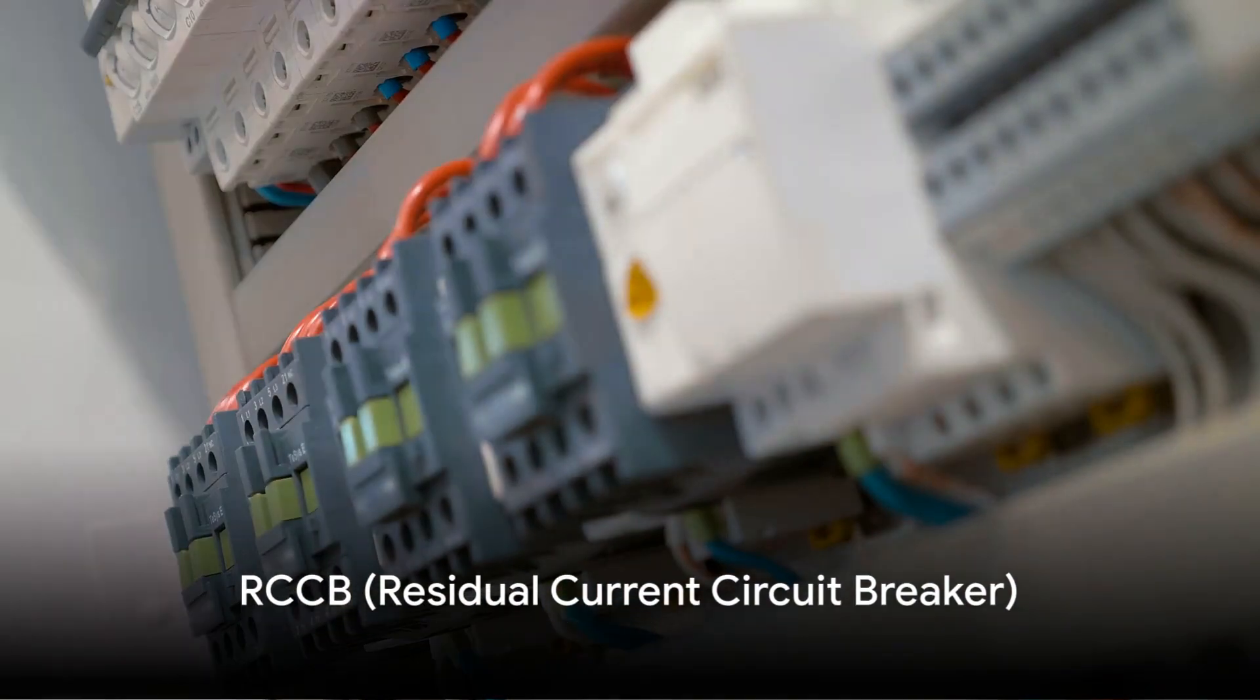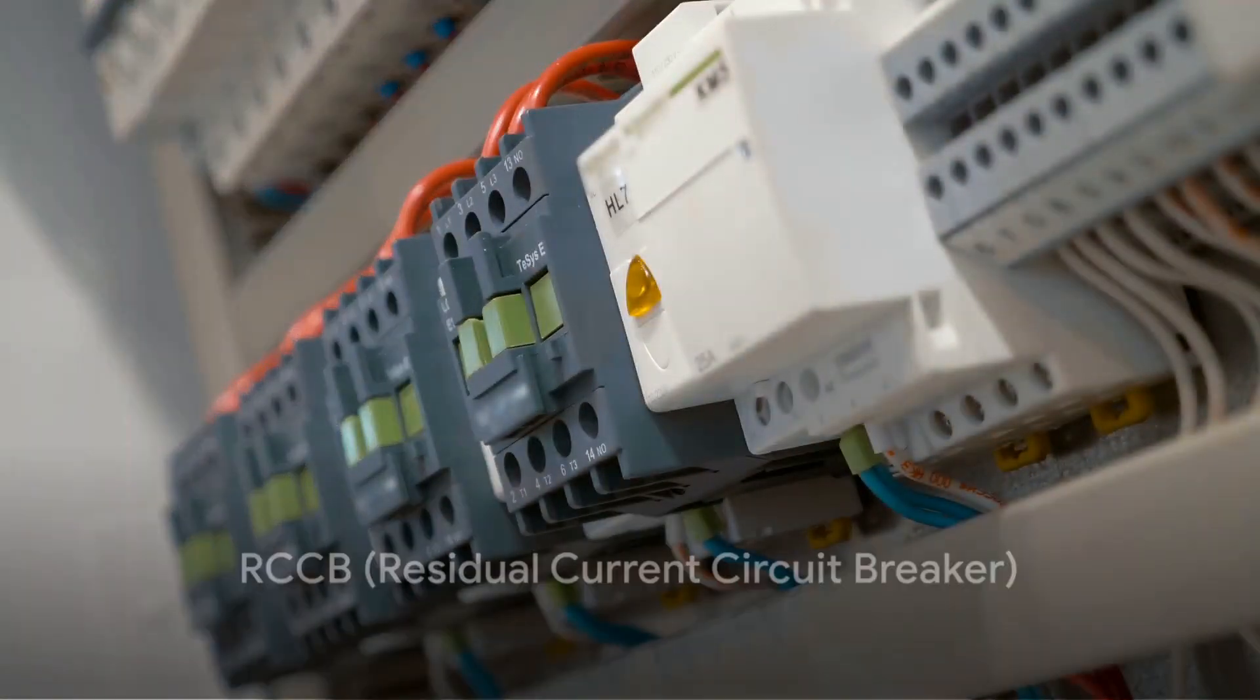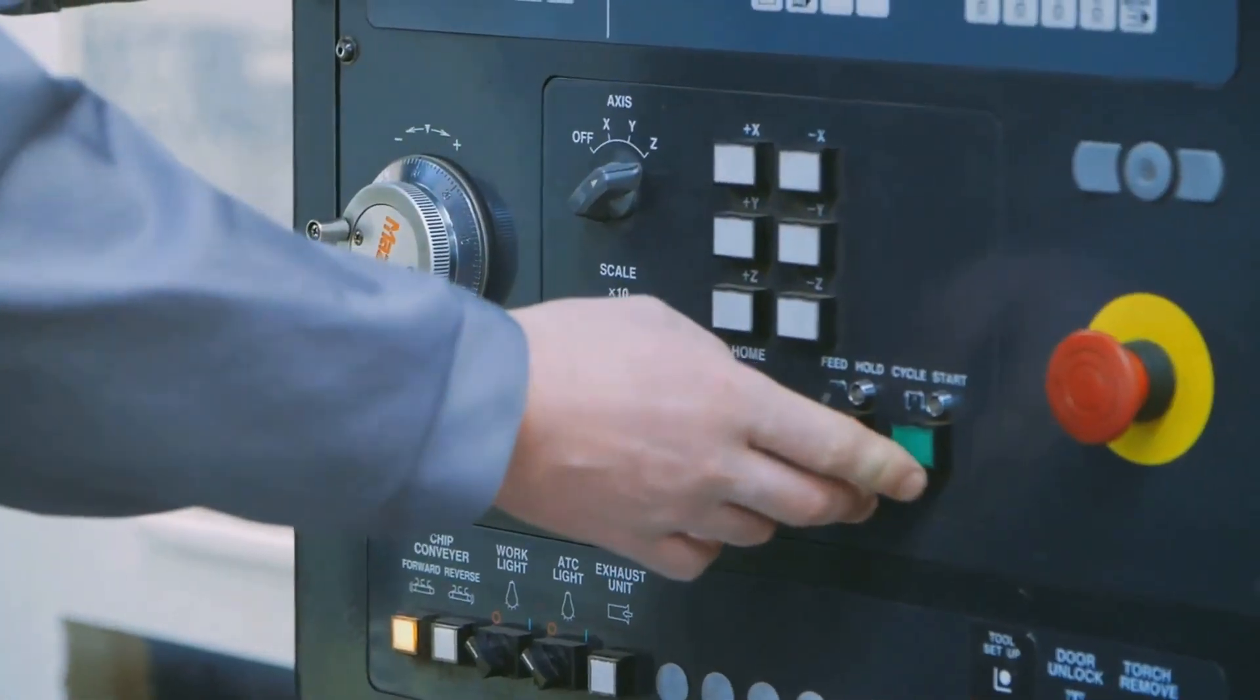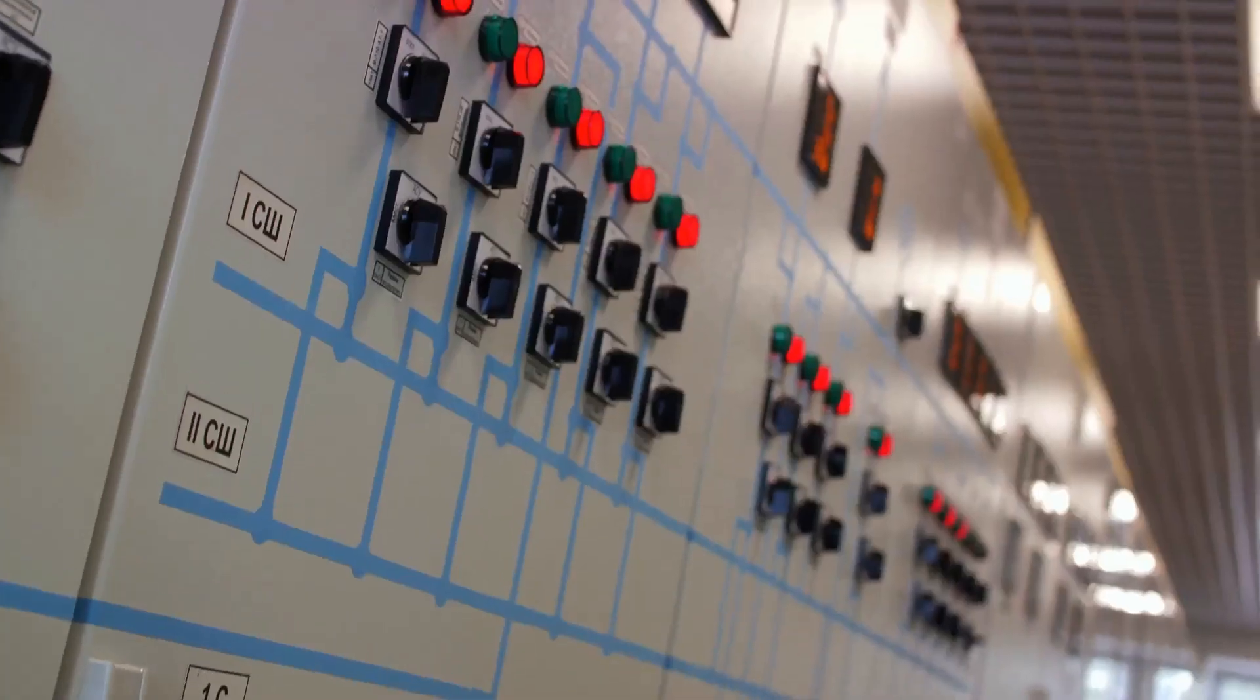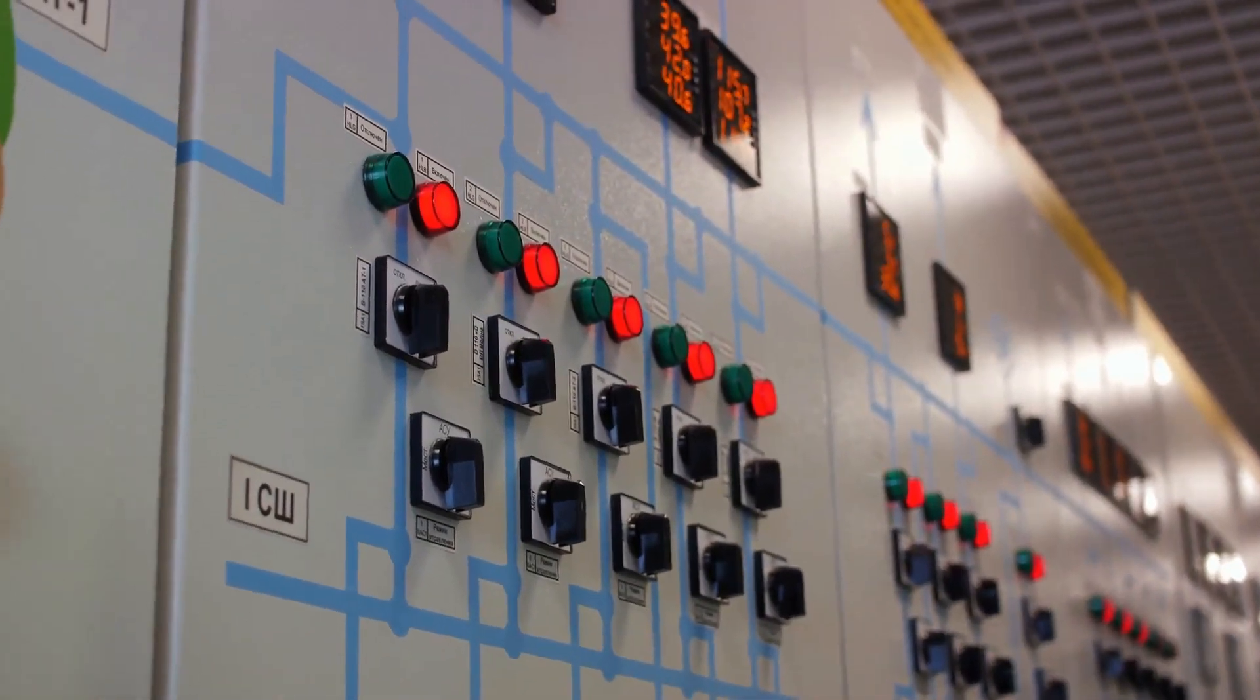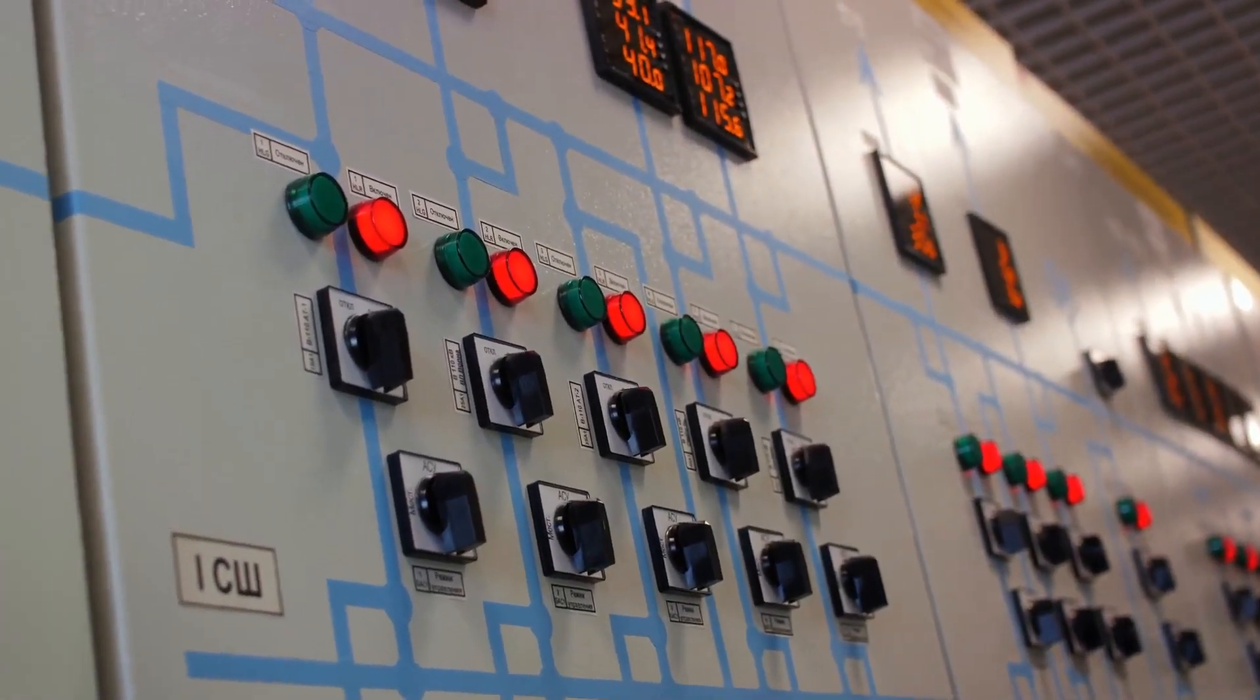First up, we have the RCCB or Residual Current Circuit Breaker. This device is your first line of defense against electrical shocks caused by current leakage. The RCCB is always vigilant, monitoring the current flow through the circuit.